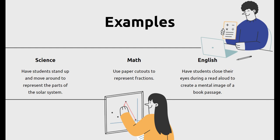Now here are three specific examples that could be used. And just a reminder, it doesn't necessarily have to be these specific classes. And you can use them in a variety of different courses. But science, for example, you can have students stand up and move around to represent the parts of a solar system. You can talk about depth or the distance from each. And they could be rotating around the sun, talking about the Copernican model. In math, maybe they're using paper cutouts to represent fractions. We've seen these before, typically when we use the little pizza shapes to represent a quarter or a half. But we can use a whole bunch of different things. We can use spaghetti noodles or beans as well. In English, maybe we have students close their eyes during a read-aloud to create a mental image of a book passage. You could do this with a lot of things. Or maybe they're creating a song or writing their own, drawing their own pictures.